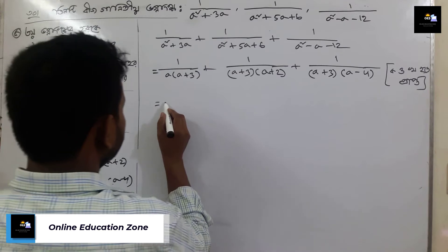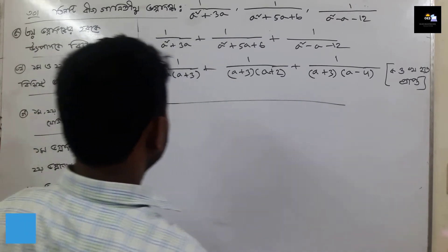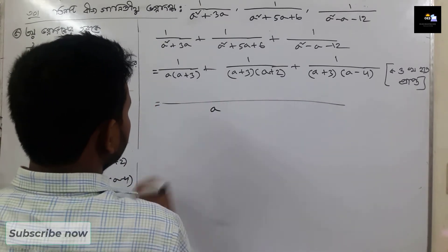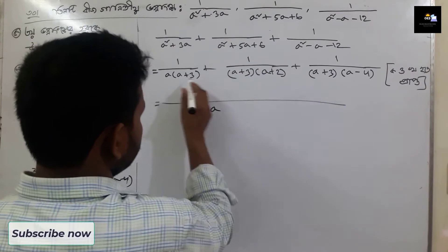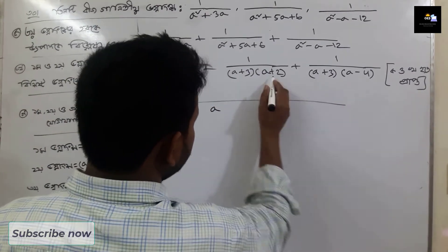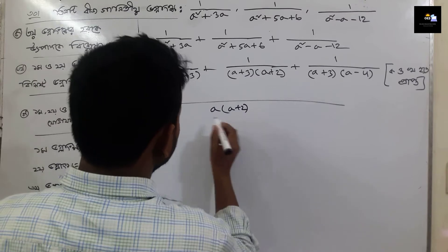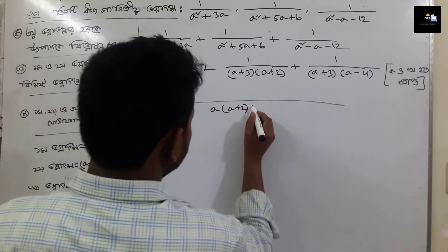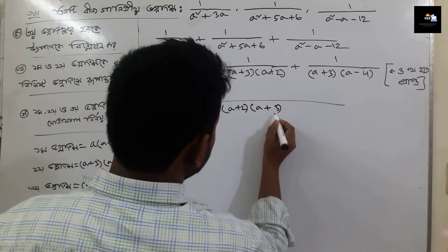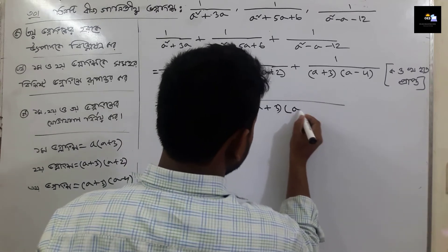So what is the same? We will see a plus 3, a plus 3, a plus 2, a plus 3. So we will have a into a plus 2. So a plus 3. What is the same? A plus 3, a plus 3. Okay.